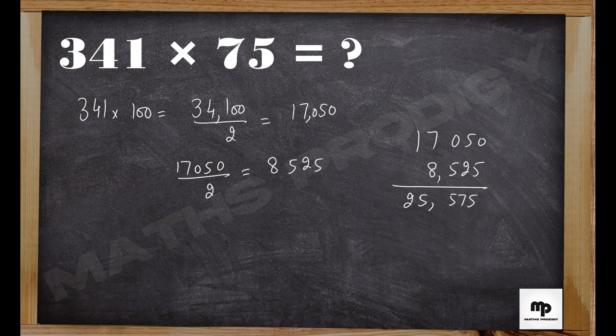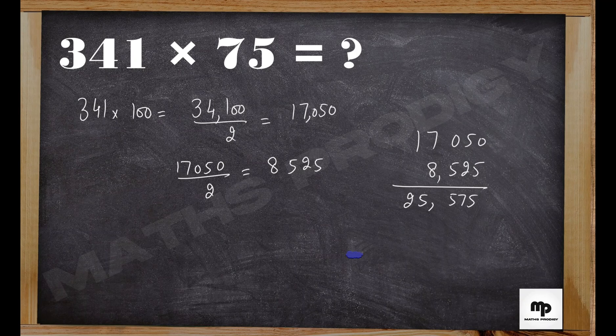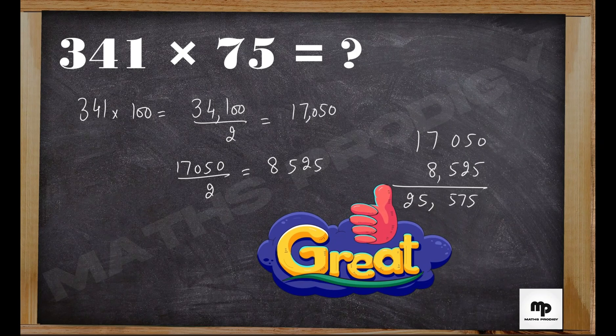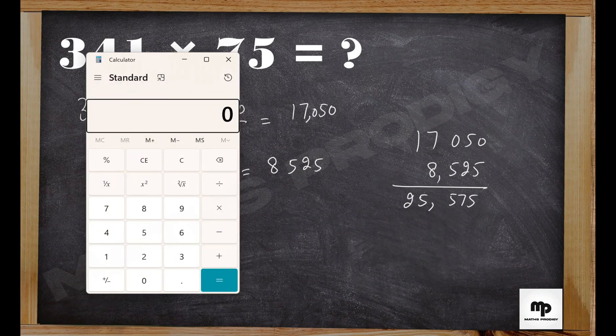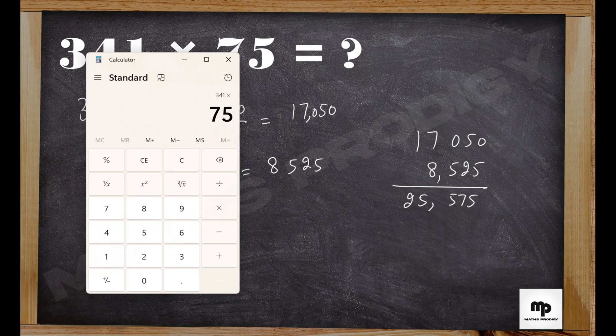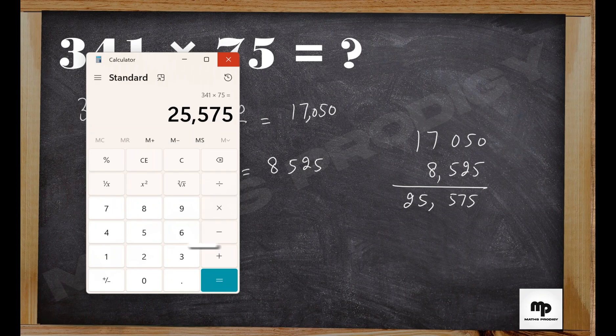We can check this on the calculator. 341 times 75 equals 25,575. Here you go.